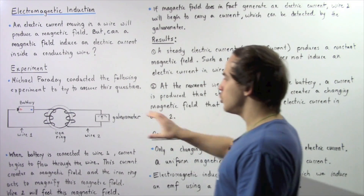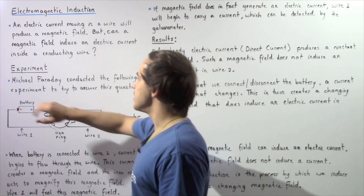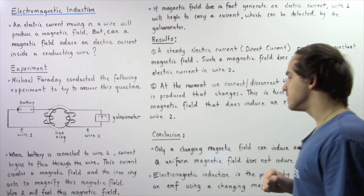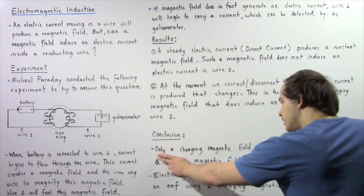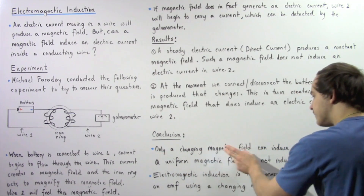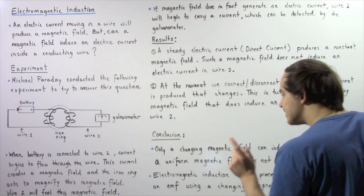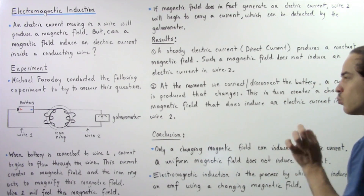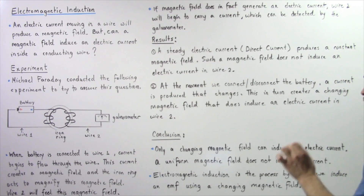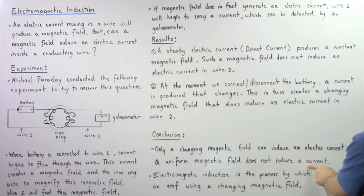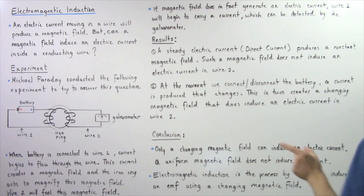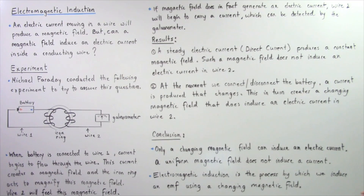The conclusion from Faraday's experiment is that only a changing magnetic field — a non-uniform magnetic field — can induce an electric current. A uniform or constant magnetic field, produced by a constant electric current, does not induce an electric current. Electromagnetic induction is the process by which we induce an EMF — an electric potential difference — using a changing magnetic field.